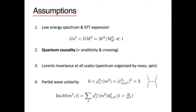Our approach uses scattering amplitudes to study causality and its constraints on Wilson coefficients. Our assumptions are: we have low-energy gravity with just gravitons (matter can be included but won't be today), the amplitude has an EFT expansion where G squared is much less than one (the usual weak coupling regime), which means there's a parametric separation between the UV cutoff of our EFT and the Planck mass.